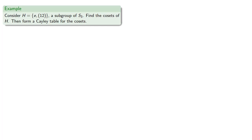So we can form the distinct cosets by choosing elements not already in a coset. So the cosets are the subgroup H being the identity and the transposition (1,2). And we know, how about the transposition (1,3) is not in a coset, so we find (1,3)H.